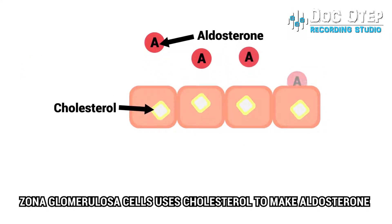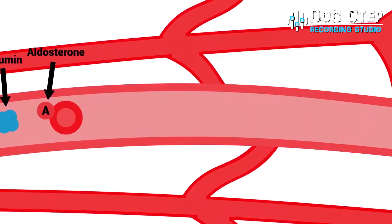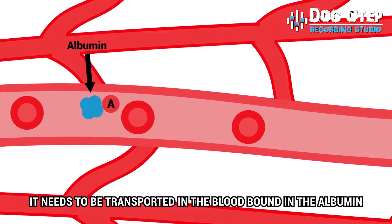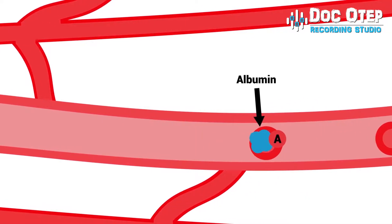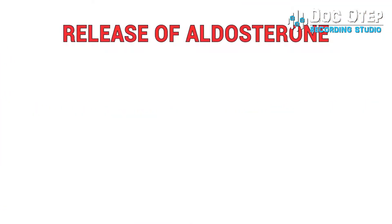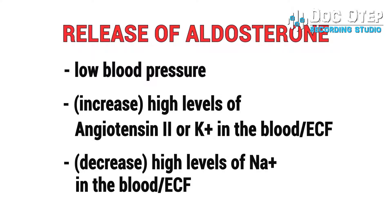Zona glomerulosa cells use cholesterol to make aldosterone. Aldosterone is hydrophobic, so it needs to be transported in the blood bound to albumin. Release of aldosterone occurs under conditions of low blood pressure. Aldosterone secretion increases if there are high levels of angiotensin-2 or potassium in the blood or ECF, and decreases if there are high levels of sodium in the blood or ECF.